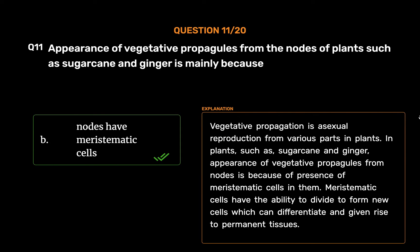Vegetative propagation is asexual reproduction from various parts in plants. In plants such as sugarcane and ginger, appearance of vegetative propagules from nodes is because of the presence of meristematic cells in them. Meristematic cells have the ability to divide to form new cells which can differentiate and give rise to permanent tissues.